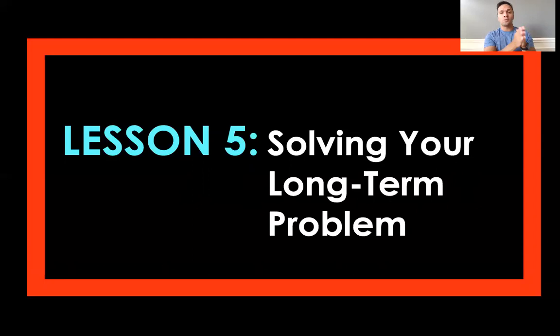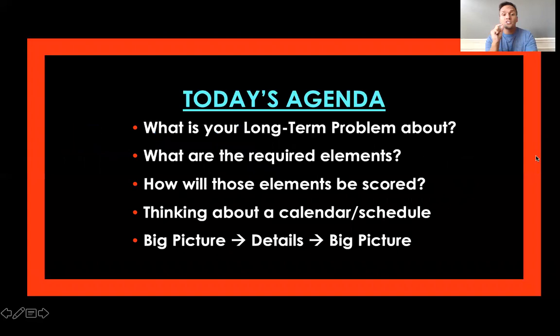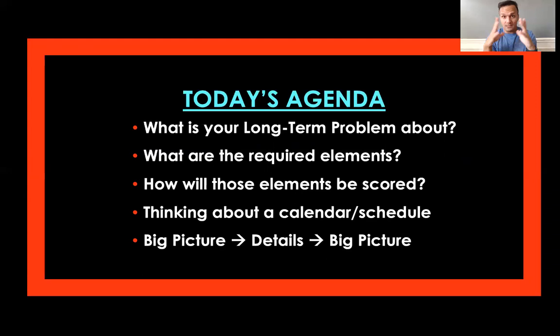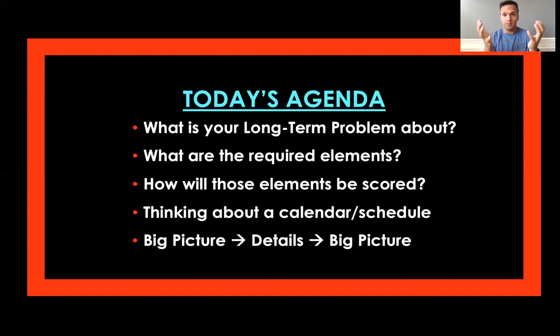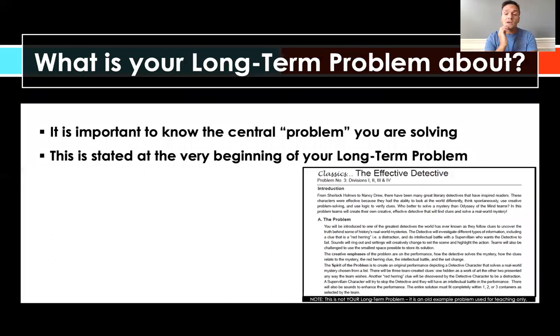We just talked about brainstorming and creativity in lesson four, and now you get a chance to apply it. Our agenda: we'll start with what your long-term problem is all about, the required elements, how those elements will be scored, creating a schedule to get everything done before competition, and thinking about your problem as a big picture first, then focusing in on the details, and taking a step back at the end to make sure you've actually solved the problem.